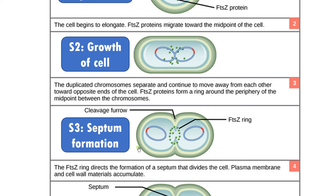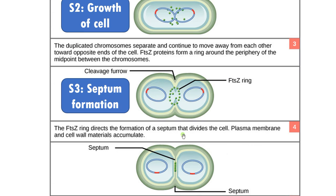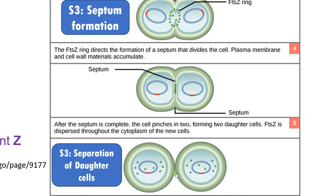Step three is septum formation or cross wall formation. The FtsZ protein moves towards the center and forms a ring called the FtsZ ring. This FtsZ ring controls the formation of the septum that divides the cell. Plasma membrane and other cell wall materials are deposited at the center, regulated by the FtsZ ring. After septum formation is complete, the cell pinches off into two daughter cells, and the FtsZ protein is dispersed throughout the cytoplasm of the new cells.